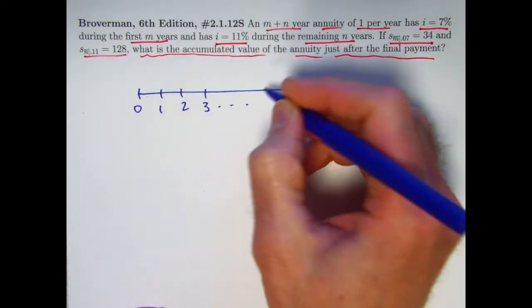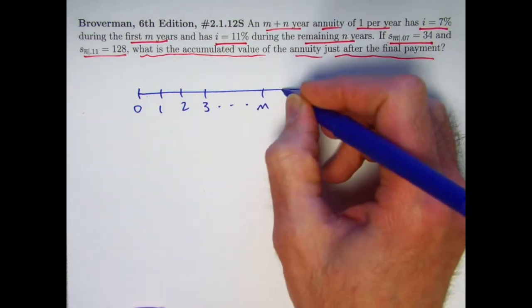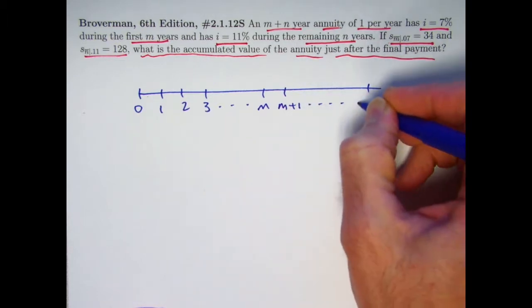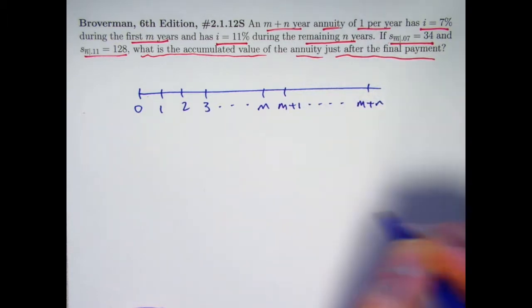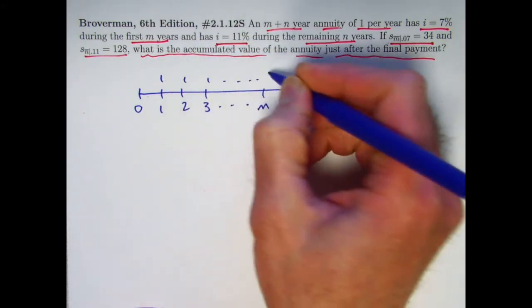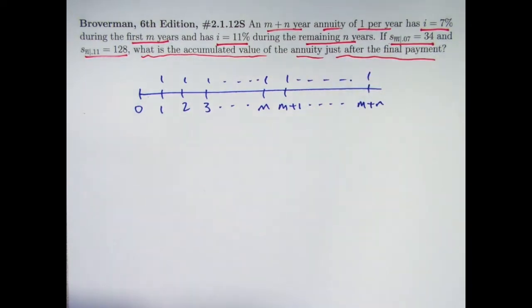You've got the first M years in which the 7% interest rate is valid, and then you've got the second group of N years in which the 11% interest rate is valid. So here are the first M payments, and then you've got the group of N payments at the end.